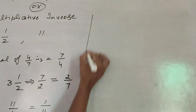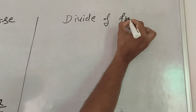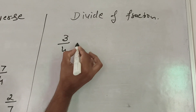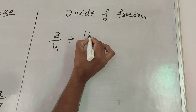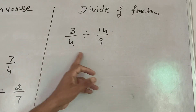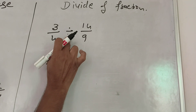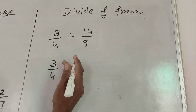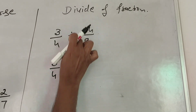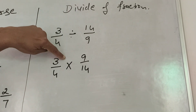We have used reciprocal of a fraction in division of fractions. For example: 3 by 7 divide by 14 by 9. We find the quotient of this. We change the divide sign into a multiplication sign, and then take the reciprocal of the second fraction: 9 by 14.